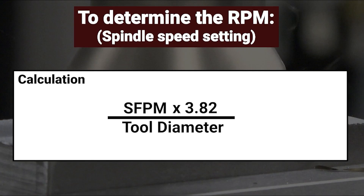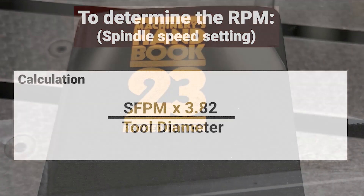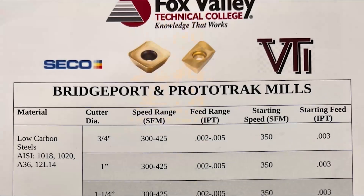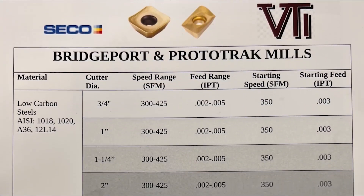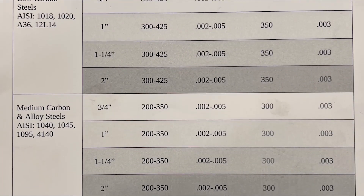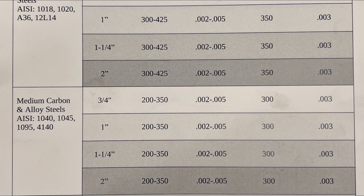How do we find the proper surface footage? We look in either the Machinery's Handbook for high-speed tools, or the technical data sheet, which is supplied by the manufacturer for all carbide tools.